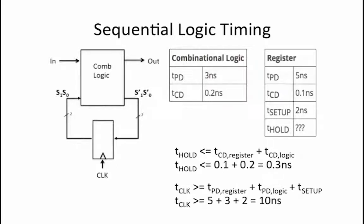The data in this circuit must propagate through the register and the combinational logic. So, the constraint on the clock period is that tclock has to be greater than or equal to tpd of the register plus tpd of the logic plus tsetup of the register.